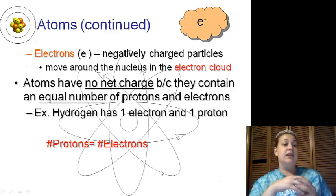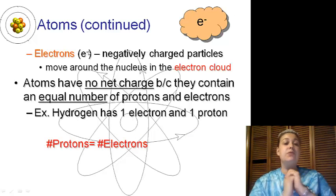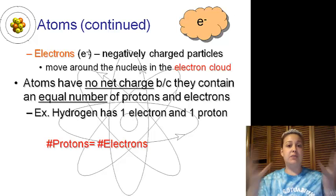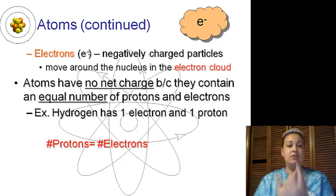Looking at our electrons, they are negatively charged. You'll see E- written down for them. They move around the nucleus in an electron cloud. Atoms themselves have no net charge because they contain equal numbers of protons and electrons, so protons equals electrons.